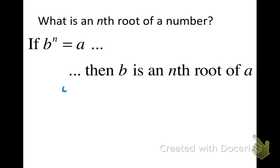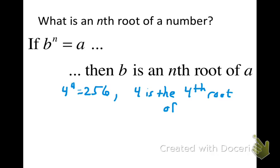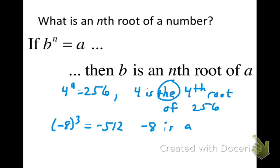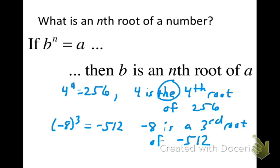We can go on to cube roots and beyond. If four to the fourth power is equal to 256, that means four is the fourth root of 256. Similarly, if negative eight to the third power is equal to negative 512, then negative eight is a third root of negative 512. When talking about finding the nth root of a number, we're finding the third, fourth, tenth, or 21st root rather than just the second root or square root.